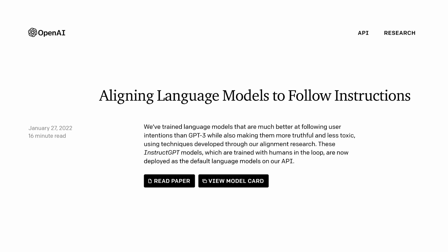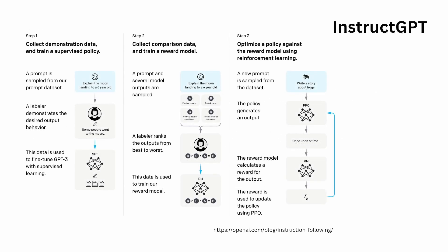OpenAI publishes a language model to follow instructions. In this research paper, they present InstructGPT models, which are trained with humans in the loop and are now deployed as the default language model for OpenAI. If you look at the training structure of InstructGPT, you see there are three steps. We now have one year of experience with InstructGPT.